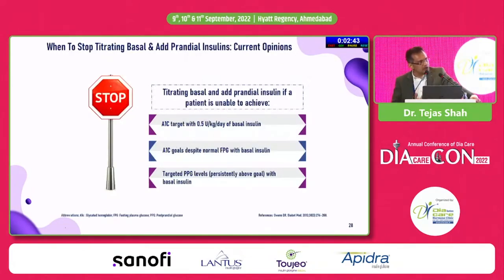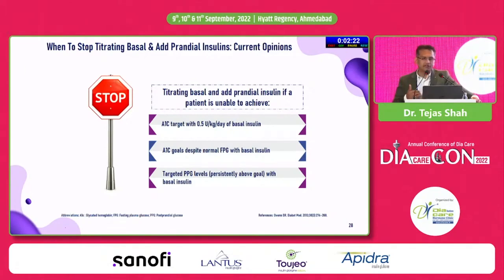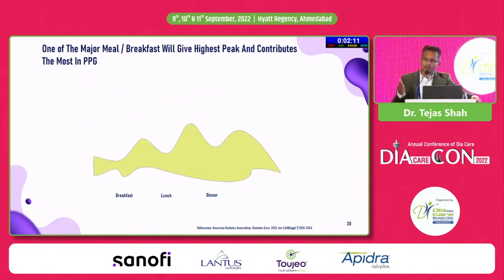Moving one step further from basal insulins — there comes a point in time where we know that basal insulin might not be sufficient. A patient's blood sugar levels may still not be at target in spite of taking around 30 units or more than 0.5 units per kg per day, and that is when we need to move on. What has been recommended clinically is that we can either go to a premixed insulin twice a day, a basal bolus regimen, or find a way somewhere in between.